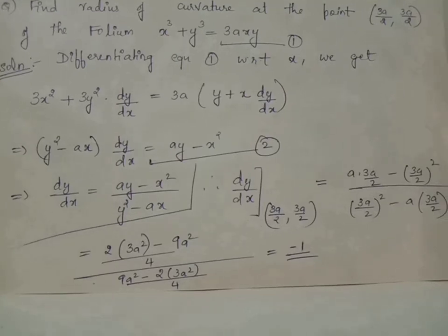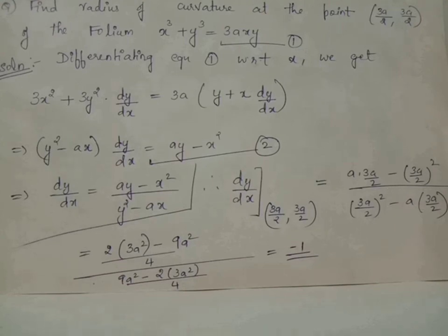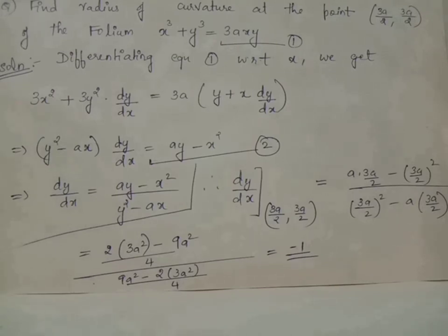Differentiating both sides of equation 1 with respect to x, we obtain 3x² + 3y²·(dy/dx) = 3a·(y + x·dy/dx). This is because when differentiating xy on the RHS, we make use of the product rule, giving 3a times (y + x·dy/dx).